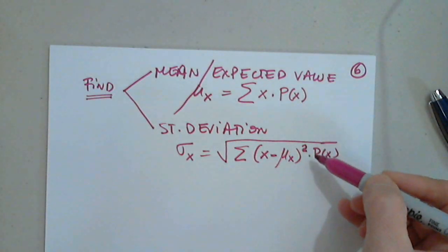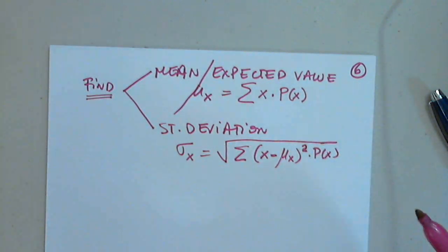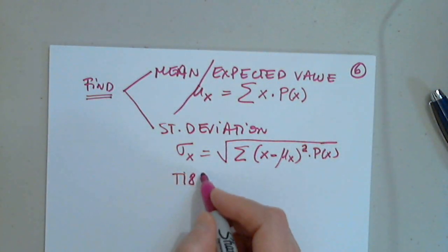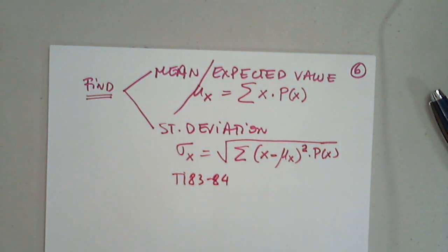We will not need to use these. We're going to use calculators, either TI-83, 84, and so on and so forth, or a stat crunch. But that's the formula. This is how we determine them.